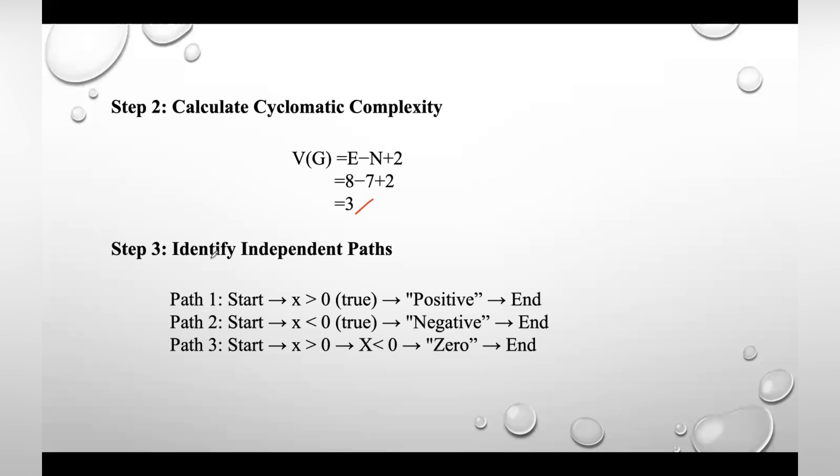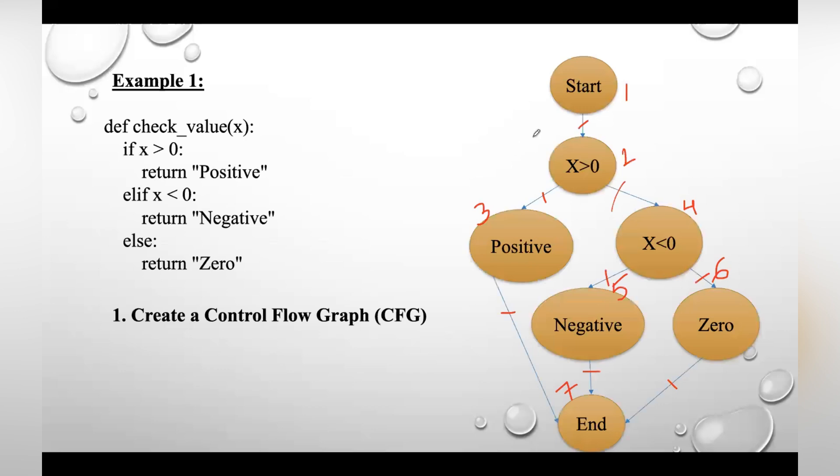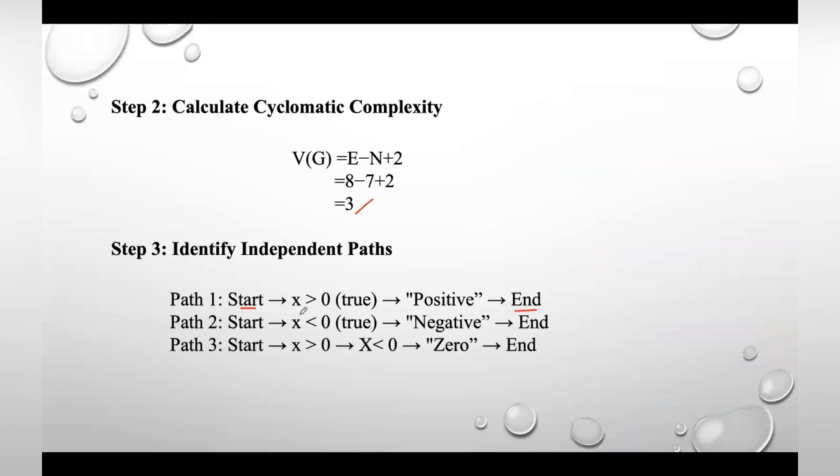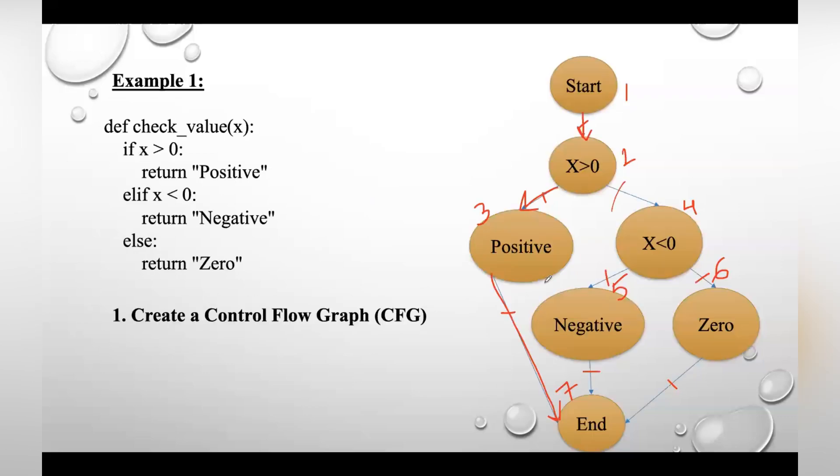Now the third step is to find out independent paths. Take this start and end—in between we need to consider the path. The first path is this side: start, check the condition, then move to end. So start, check the condition, move to positive, end.